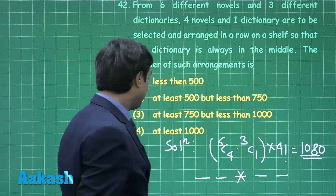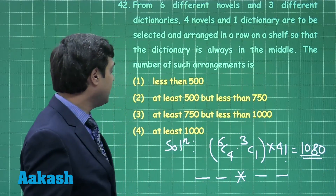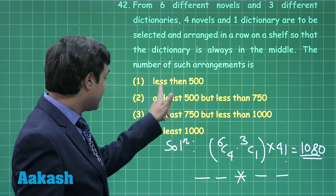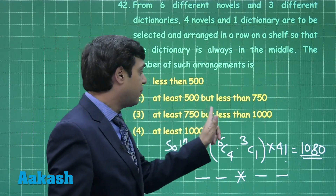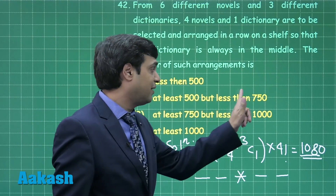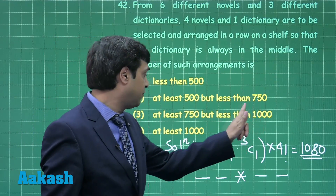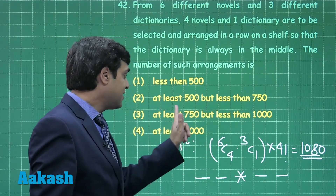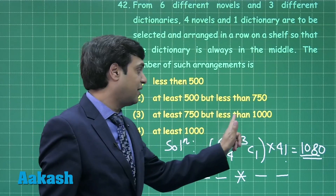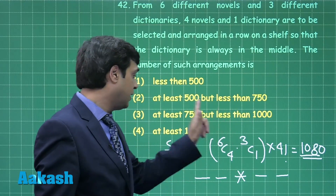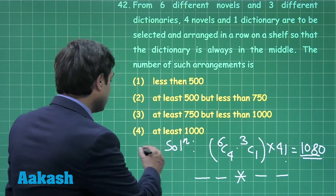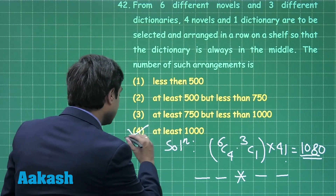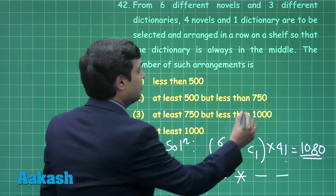From the given options: less than 500; at least 500 but less than 750; at least 750 but less than 1000; at least 1000. Since our answer is 1080, the correct answer is option number 4.